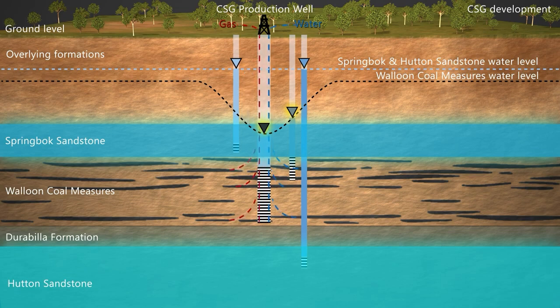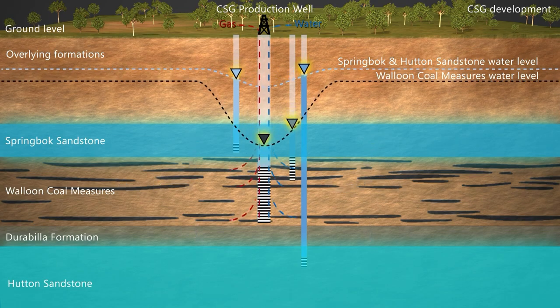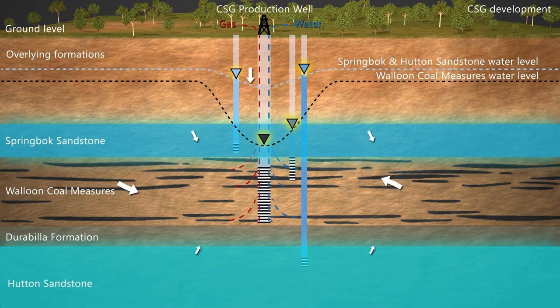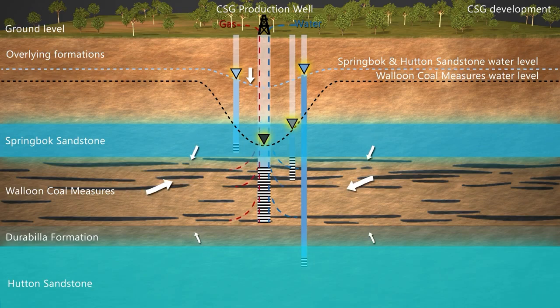Depending on how permeable the intervening formations are, water can move from those aquifers into the coal formation, lowering the water level in the aquifers. This is how groundwater is impacted.